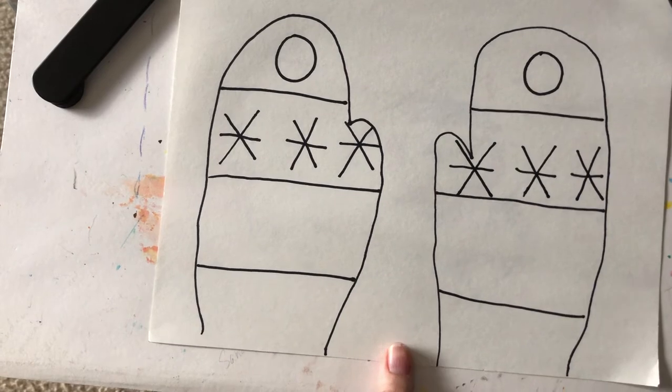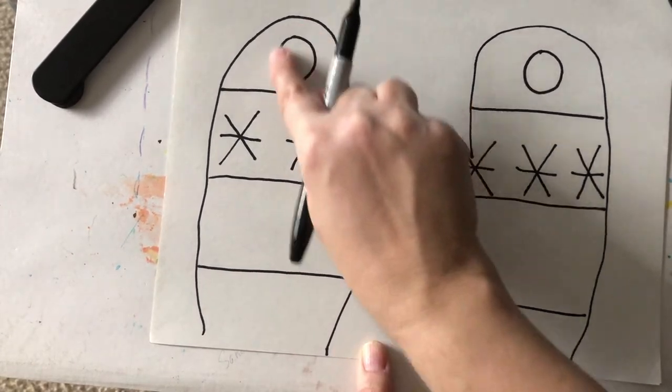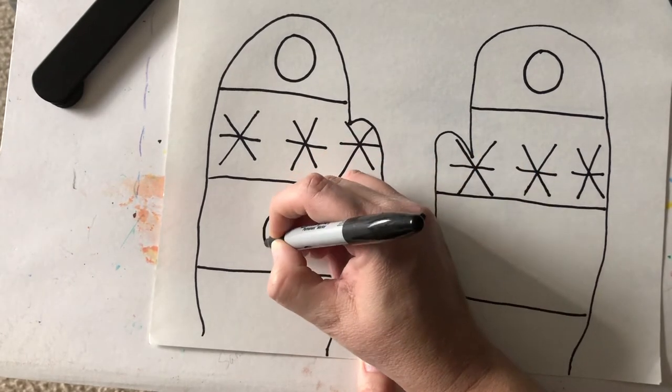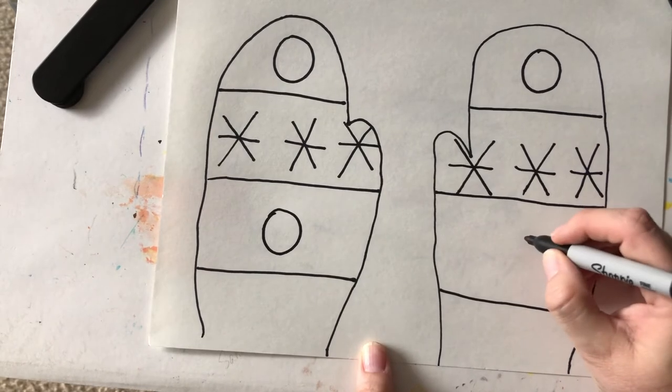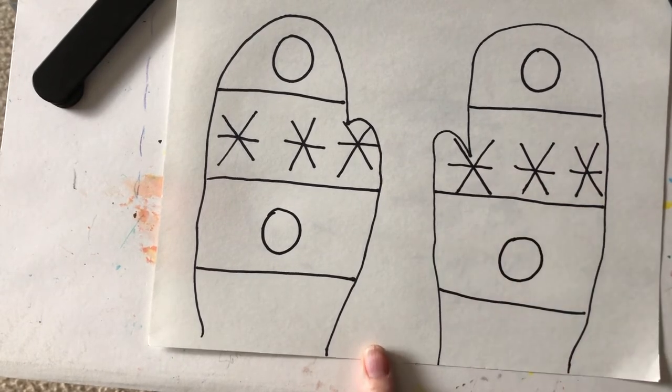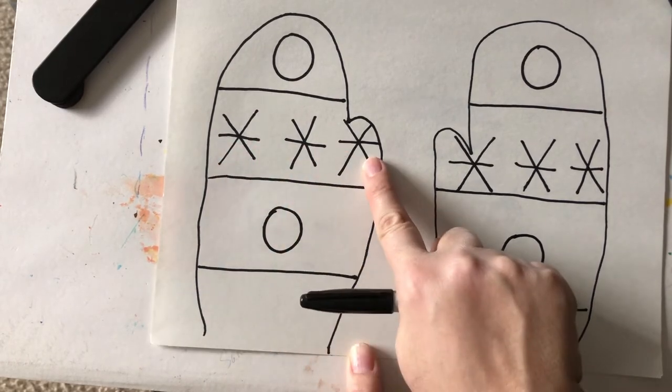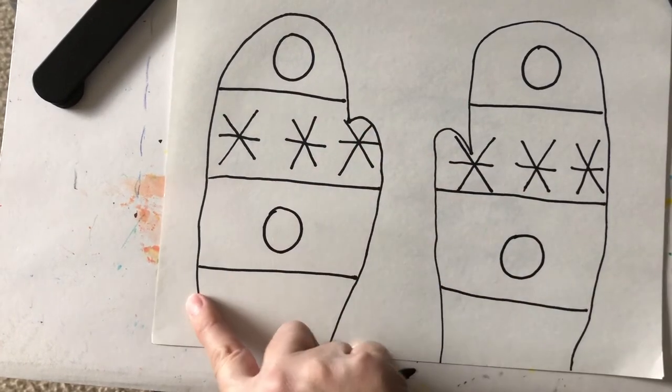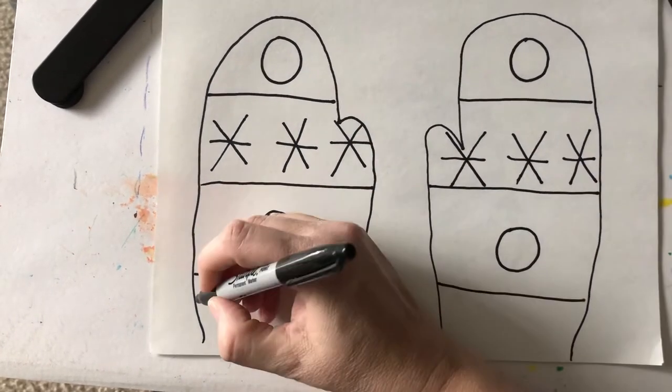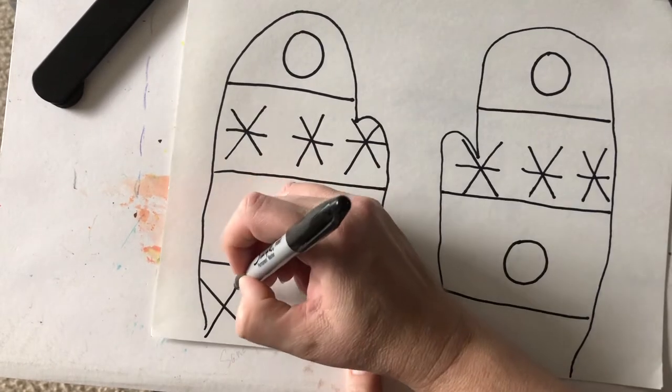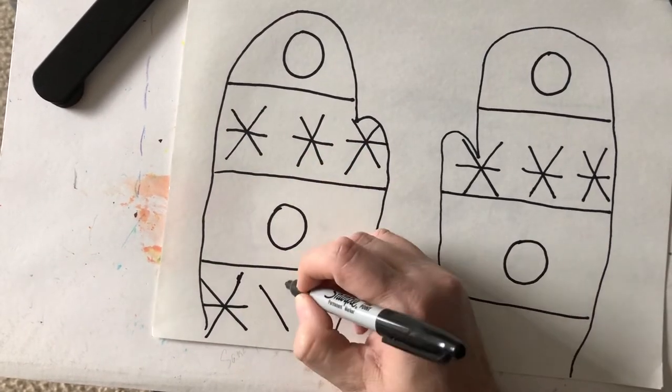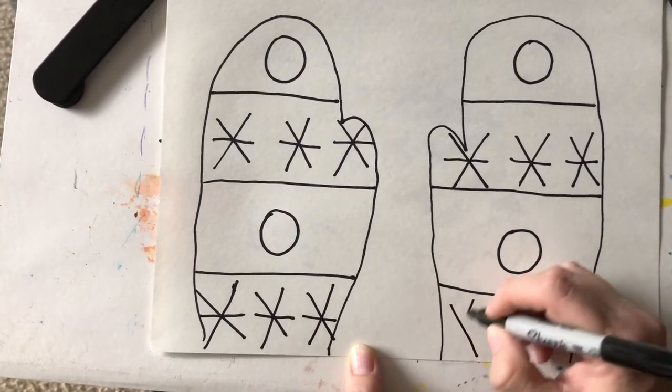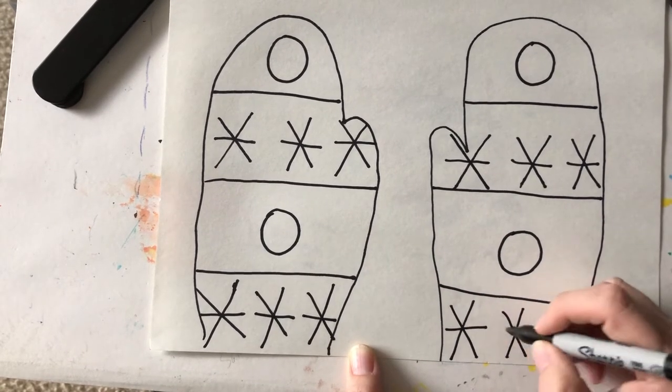All right what shape did we start with? I started with a circle. You might have started with something different. Whatever shape you used up here we're going to put down here. So I'm going to draw another circle and over here I'm going to draw another circle and then we're going to repeat this. So we have a circle, snowflake, circle, snowflake. So we're going to draw X's with a line through them and I'm going to do the same thing on the right side.